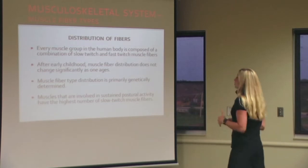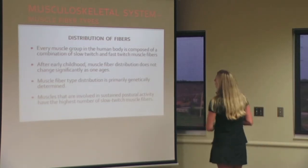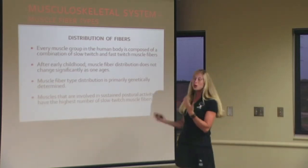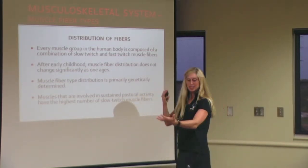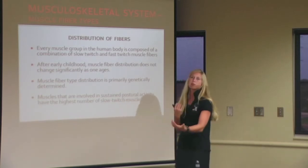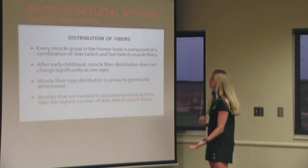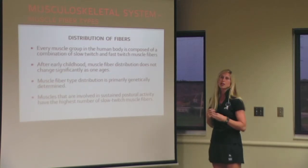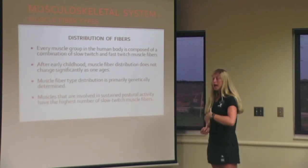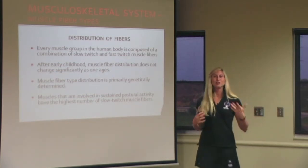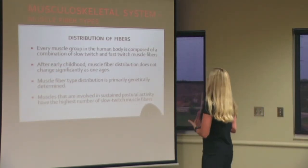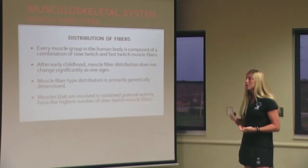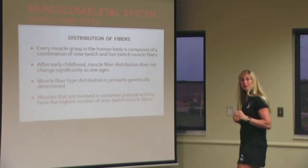Every body has all three kinds of muscle, and in each muscle, all three fiber types are present — it's just the proportion that varies. How we live our life in childhood determines a lot about how these fibers are distributed, but the type that we get is primarily genetic.